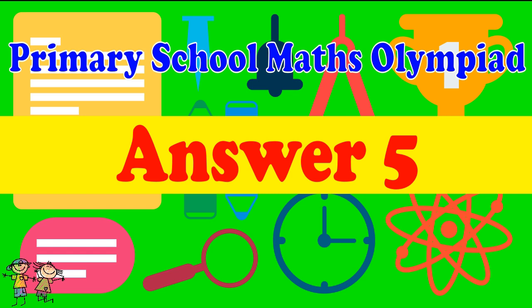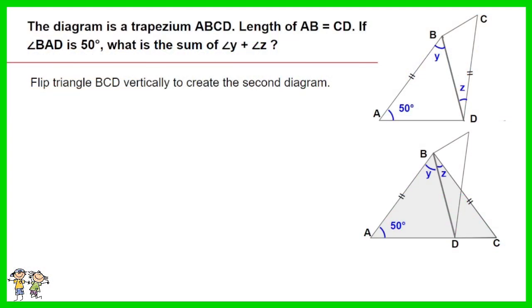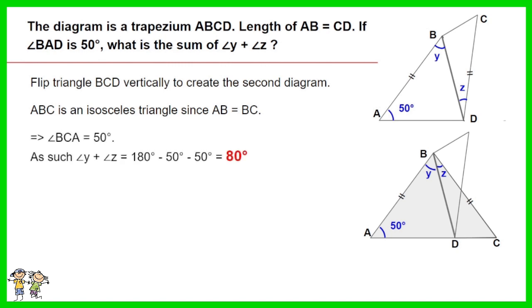Answer for question 5. Flip triangle BCD vertically to create the second diagram. ABC is an isosceles triangle since AB equals BC. As such, angle BCA equals 50 degrees. Thus angle Y plus angle Z equals 180 minus 50 minus 50. The answer is 80 degrees.